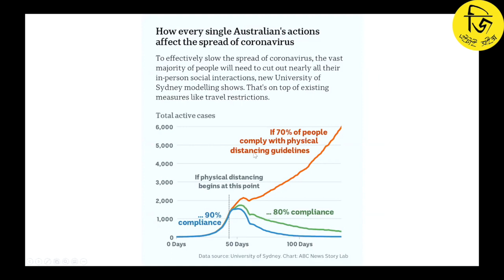This is a study analysis from the University of Sydney. You can see that when we have the spread of coronavirus, we need to implement physical distancing. Physical distancing is a non-pharmaceutical intervention, and we need to maintain a 2-metre distance.